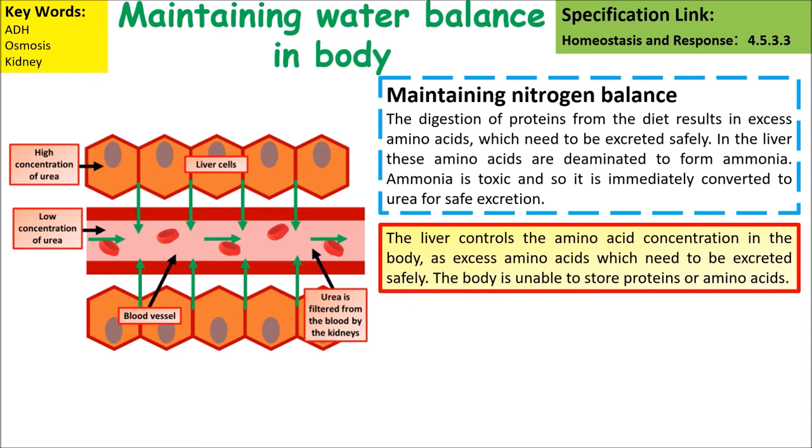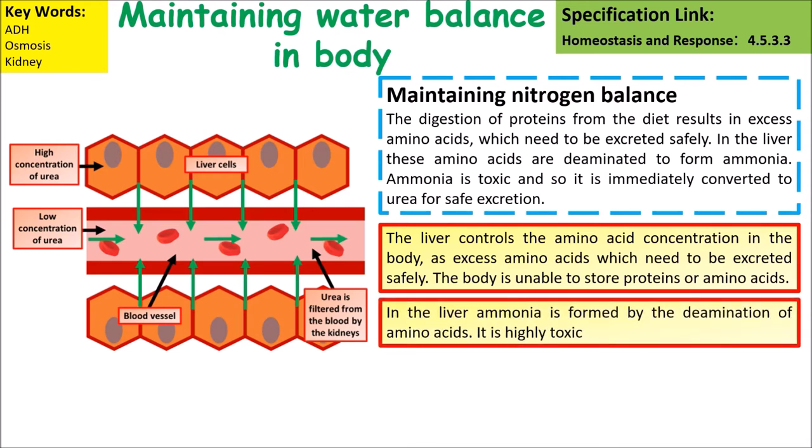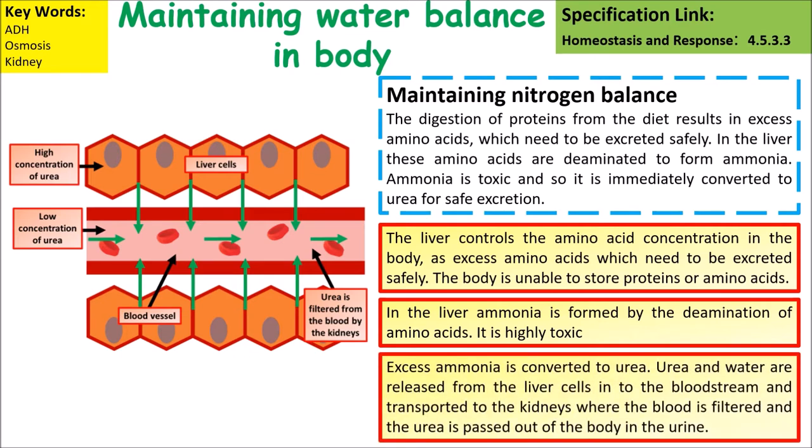The body is unable to store large amounts of amino acids from digestion. In the liver, ammonia is formed by the deamination of amino acids; however, it is highly toxic. Excess ammonia is converted into urea. Urea and water are then released from the liver cells into the bloodstream and transported to the kidneys, where the blood is filtered and urea is passed out of the body in the urine.